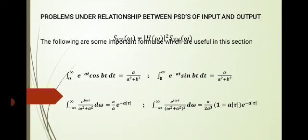These are the formulas. Integral 0 to infinity e power minus at cos bt dt equal to a by a square plus b square. Integral 0 to infinity e power minus at sin bt dt equal to b by a square plus b square. Integral minus infinity to infinity e power i omega tau divided by omega square plus a square d omega equal to pi by a e power minus a modulus of tau.